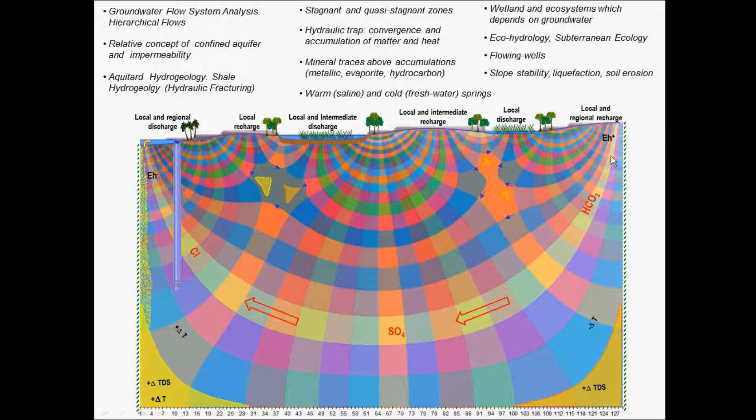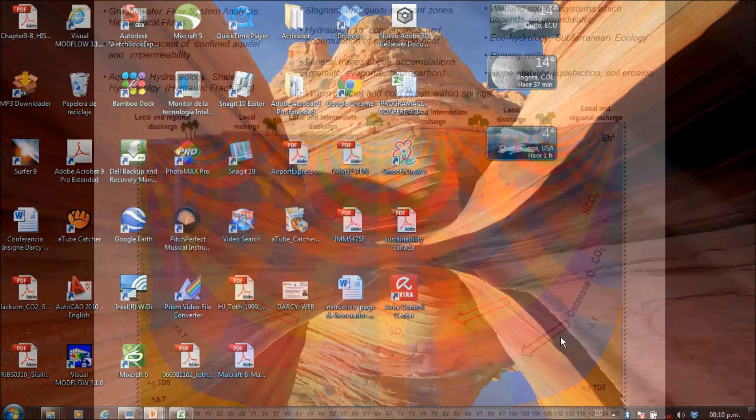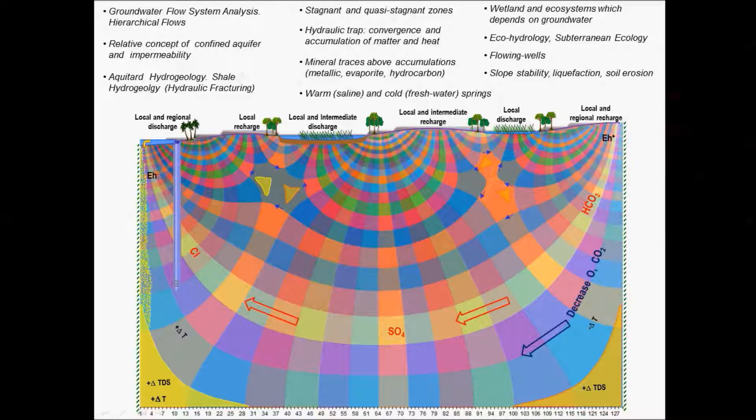Near and along all the flow paths, you can find oxidizing and reducing conditions and many other features. For example, here also decreasing oxygen and CO2 along the flow paths. There is a wide range of features that can be explained by this flow system analysis.